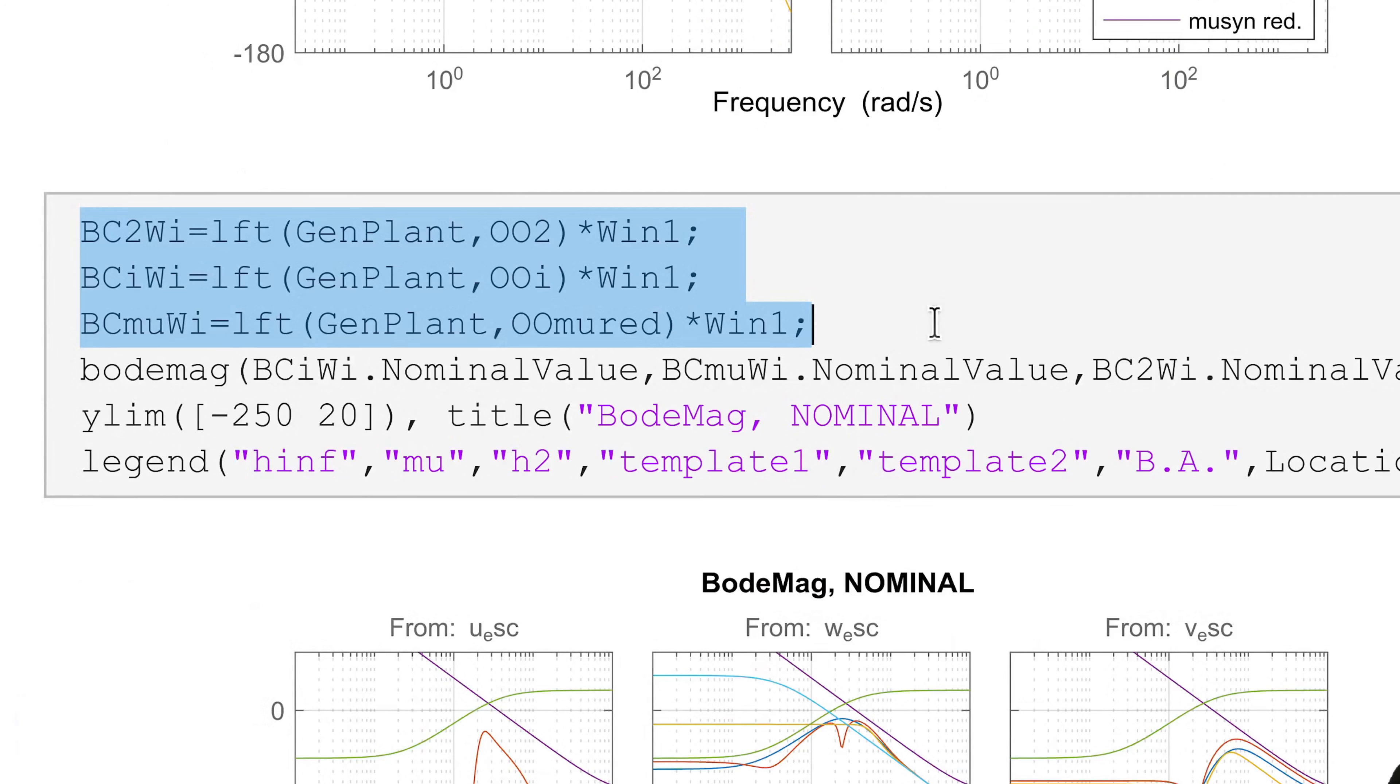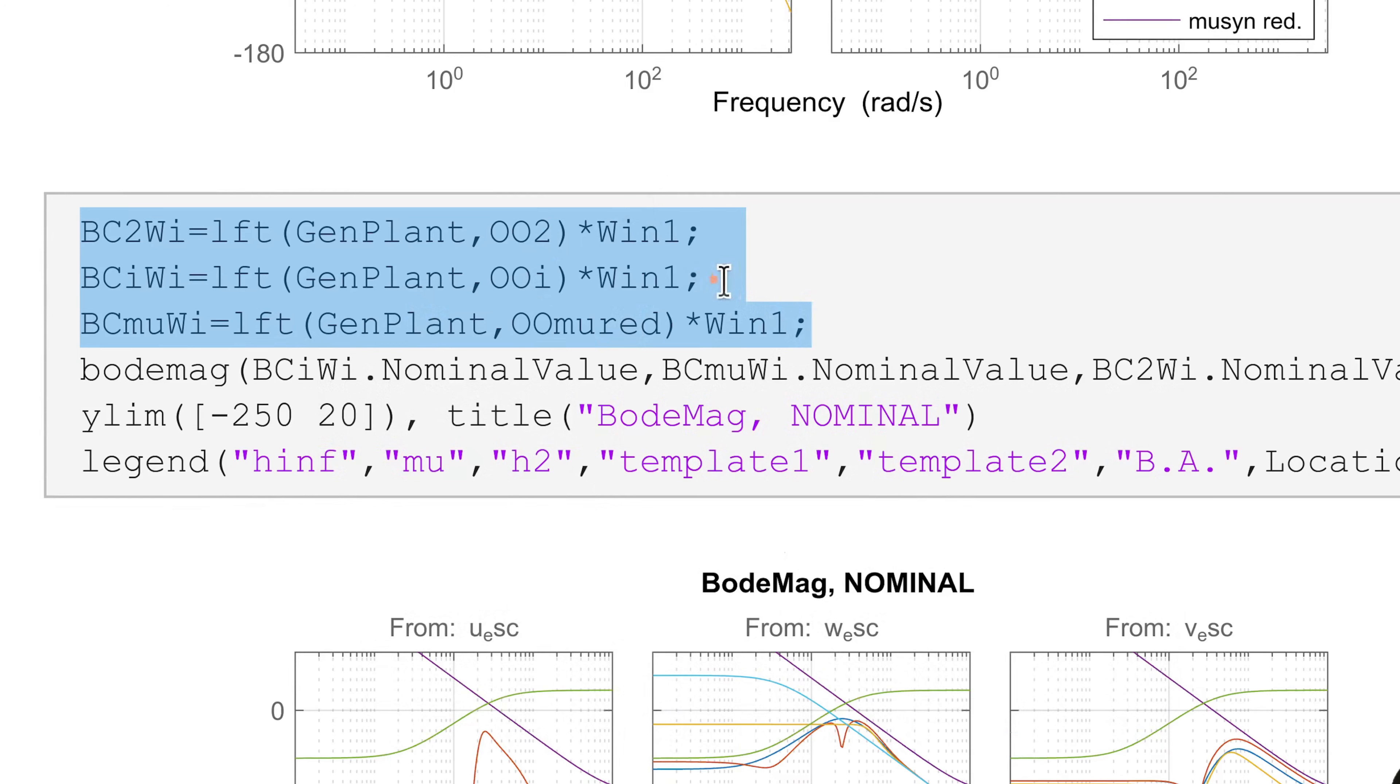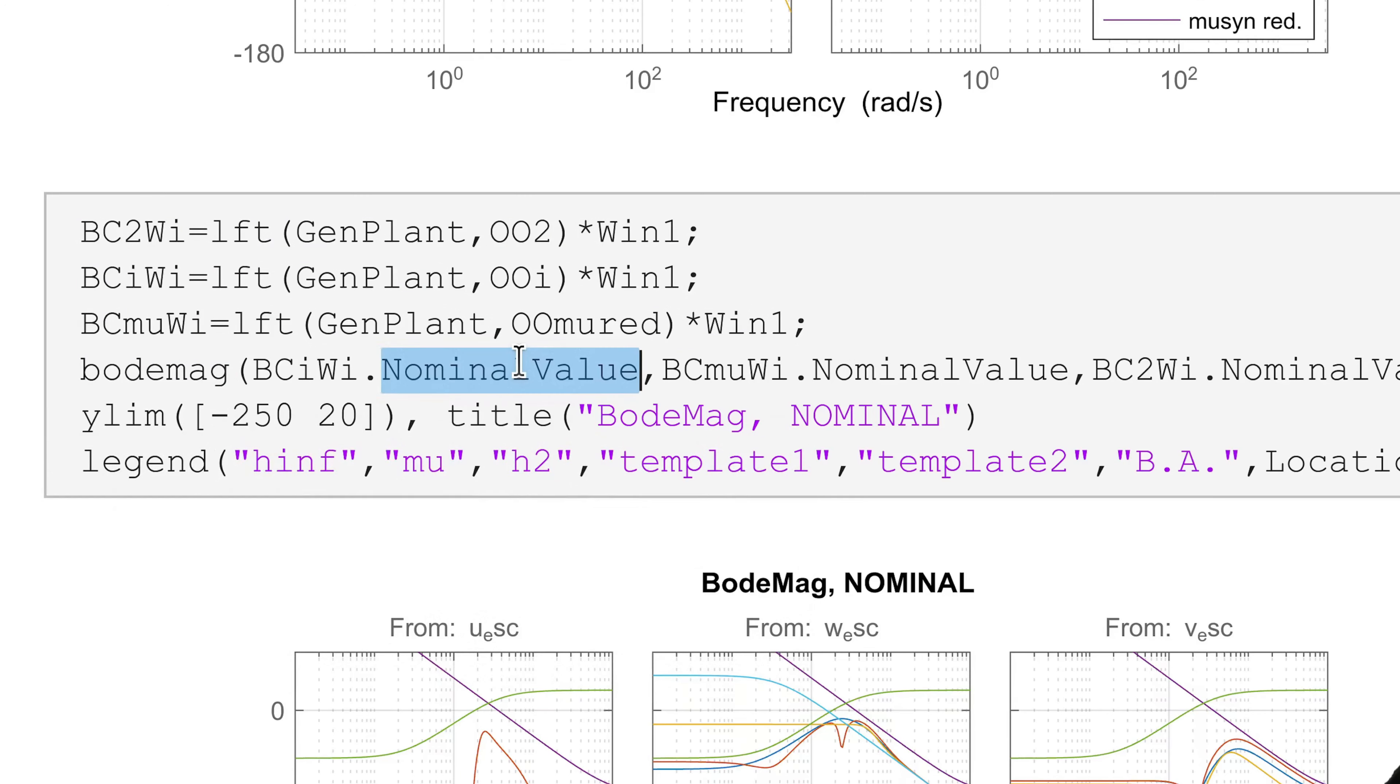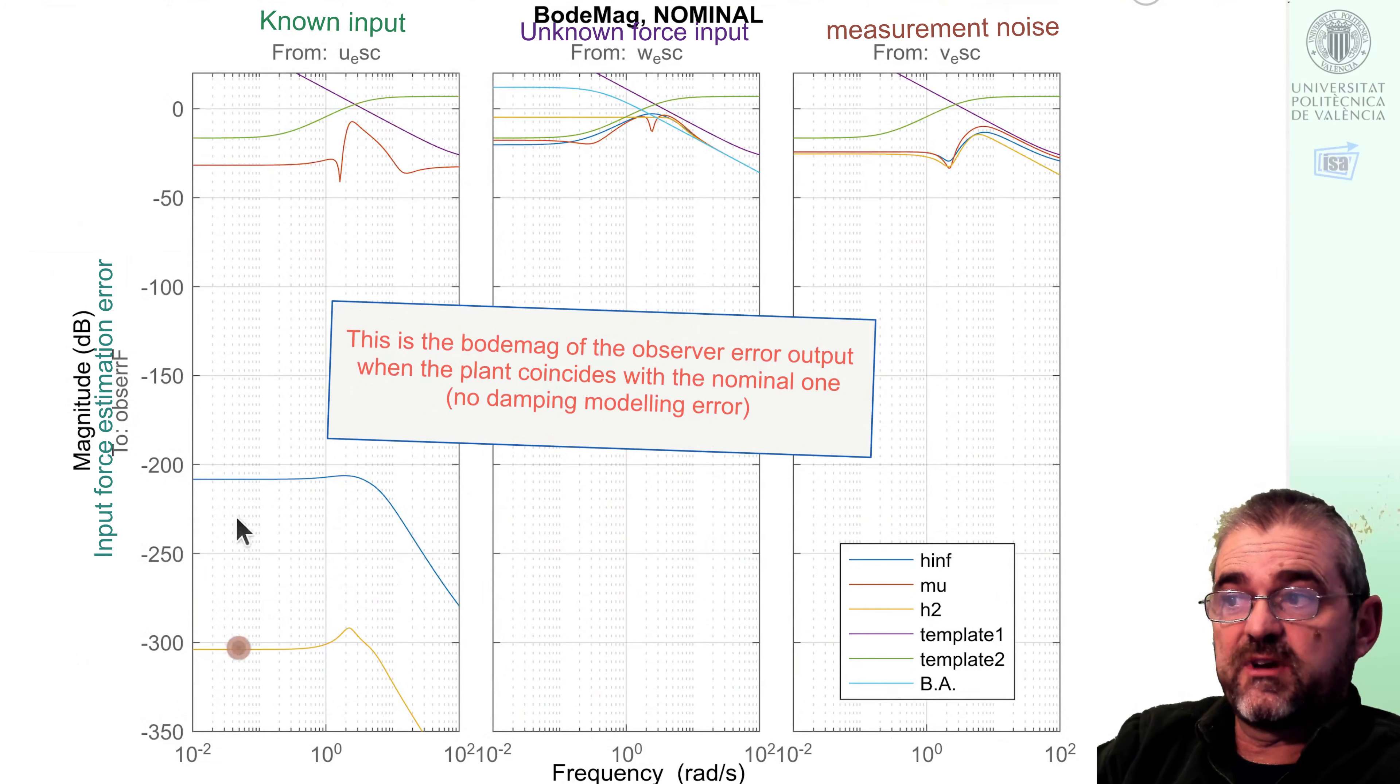And let's go with the important one which is the LFT interconnection of the generalized plant of the H2, H infinity, and mu synthesis reduced, in which the inputs, process noise and measurement noise, are multiplied by the suitable weights, so that amplitude 1 means the suitable amplitude in actual physical units, as in the problem statement. So we do these three Bode mag plots, and first we will plot the nominal value. So if we have a look, the first thing we can see is that the H2 and H infinity designs perfectly cancel the effect of known input.